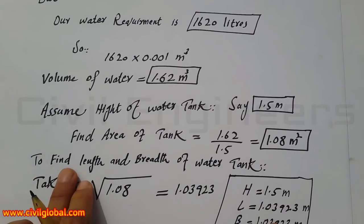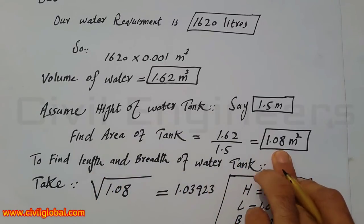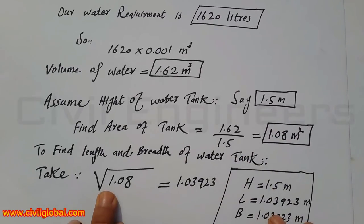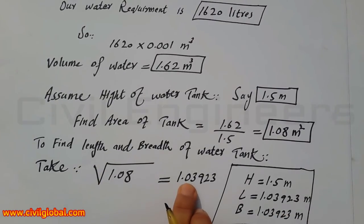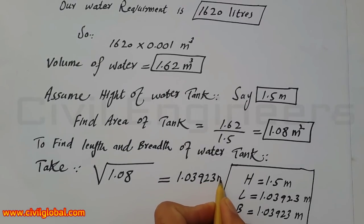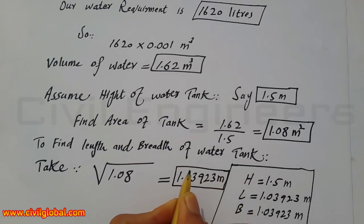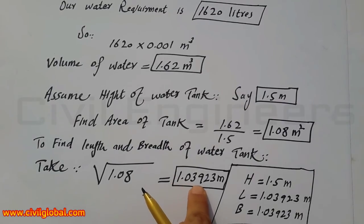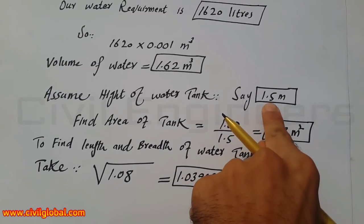To find the length and breadth of the water tank, take the square root of the area. √1.08 = 1.039 meters. So one side equals 1.039 meters. The height is already assumed as 1.5 meters, and the length and breadth are both 1.039 meters.